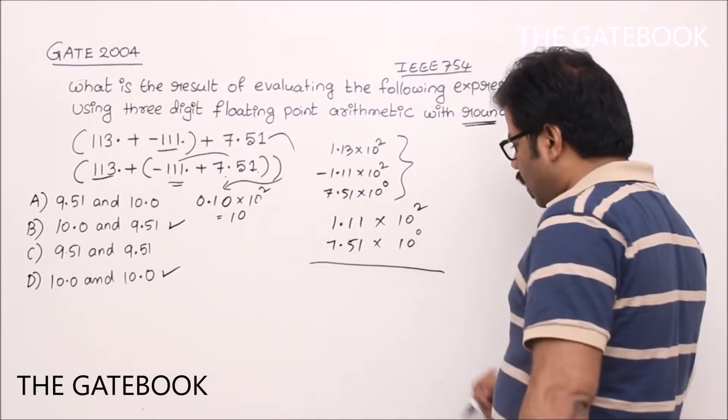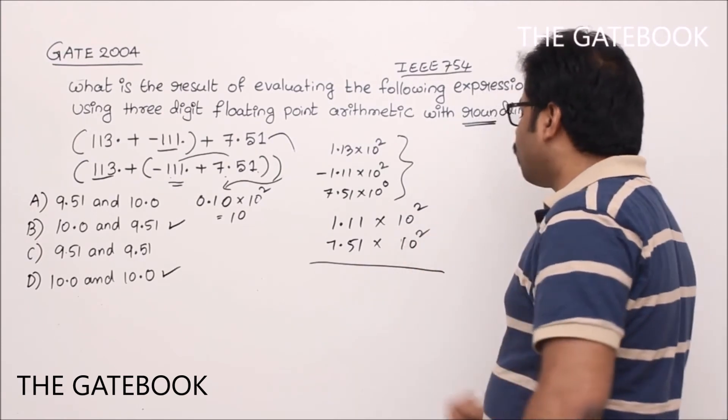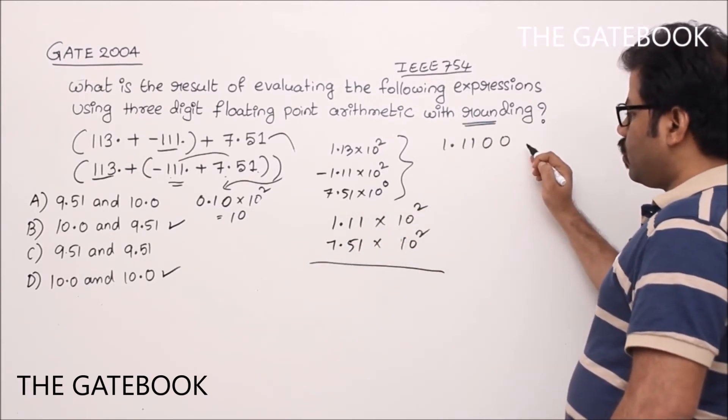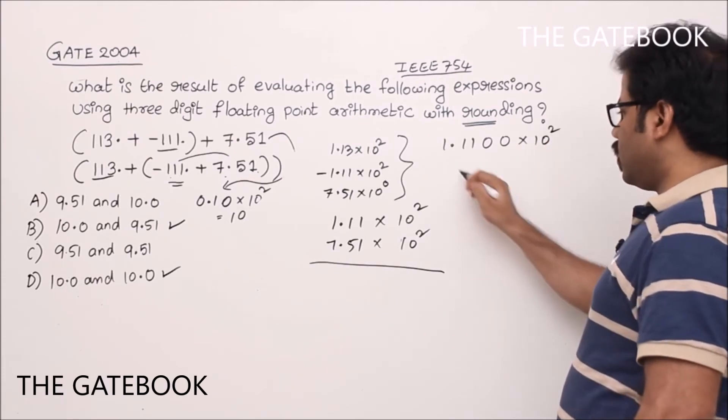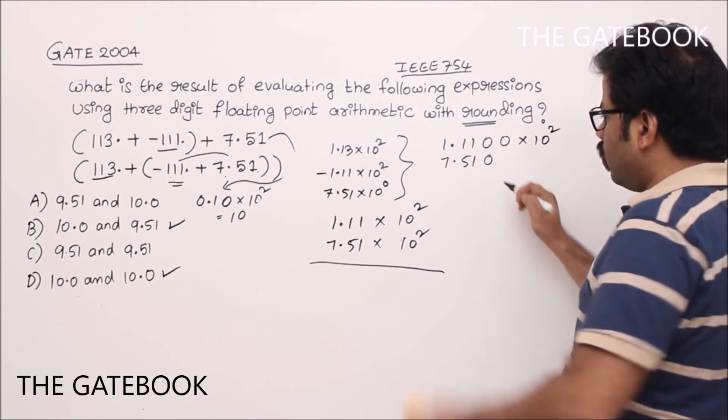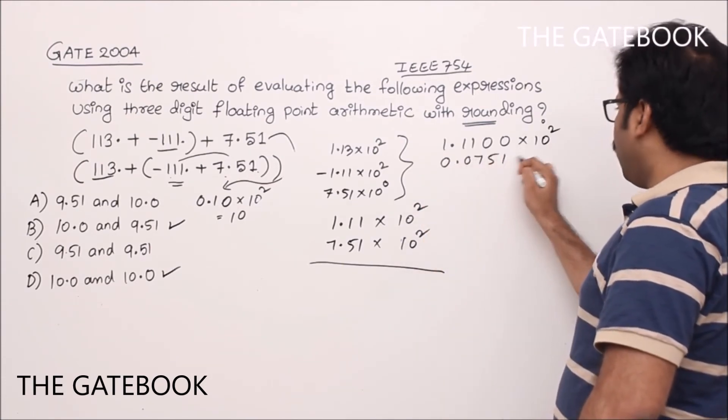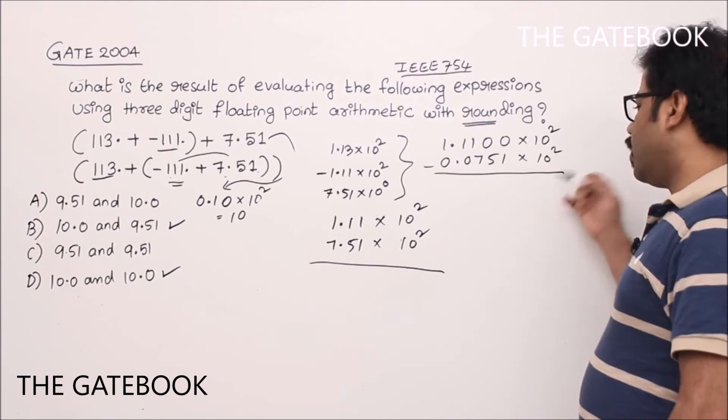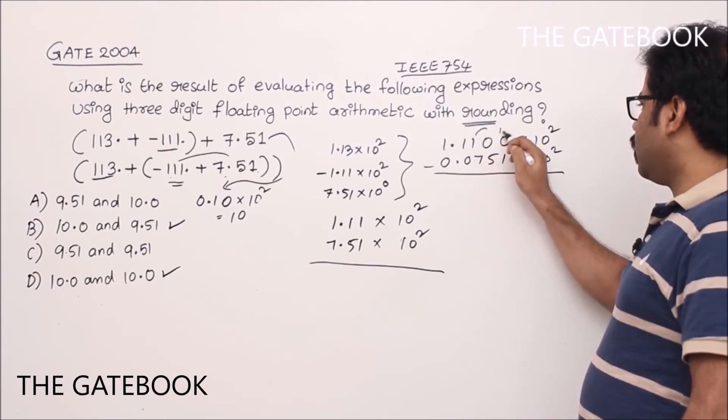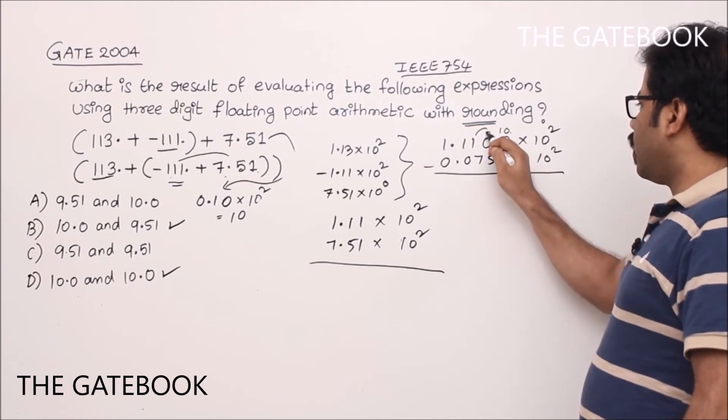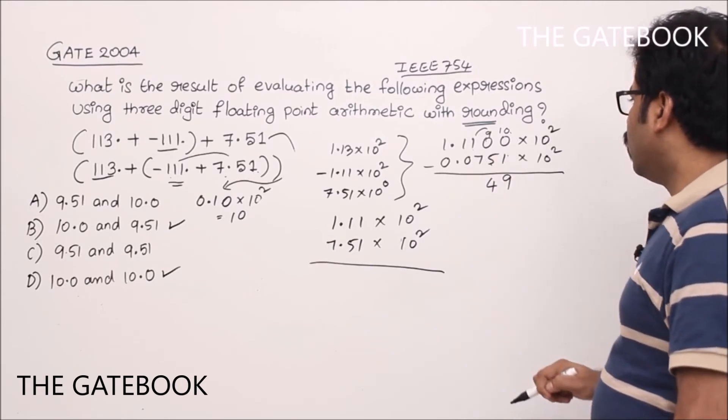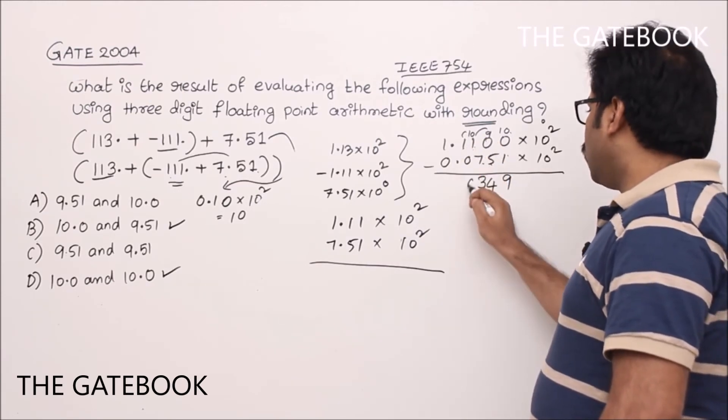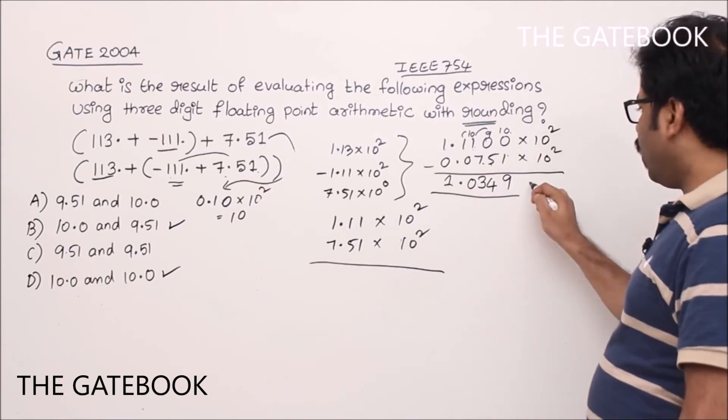Minus 1.11 of course, minus we can put later. So 1.11 into 10 squared. Second one is 7.51 into 10 to the power of 0. The first immediate step is shifting the mantissa because we have to make these exponents equal. So if I do that, I get 1.1100 and 0.0751 into 10 squared. Already we had enough experience. So now subtraction is easy. Let us do subtraction. 10 minus 1 is 9, 9 minus 5 is 4, 0 minus 7 we need to borrow, 10 minus 7 is 3. 1.0349 into 10 squared. And of course minus because end of the day we have to keep minus because 111 is bigger than 7.51.